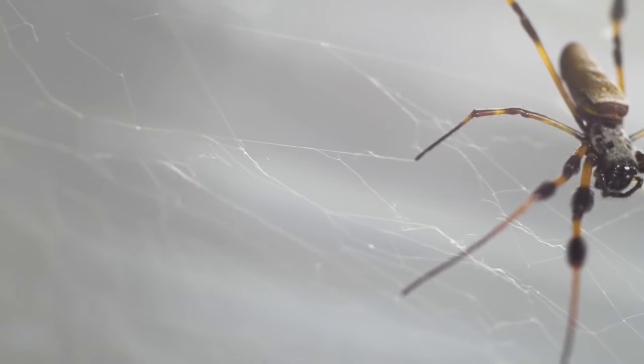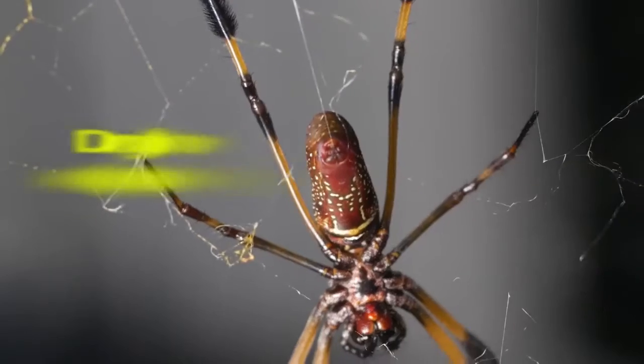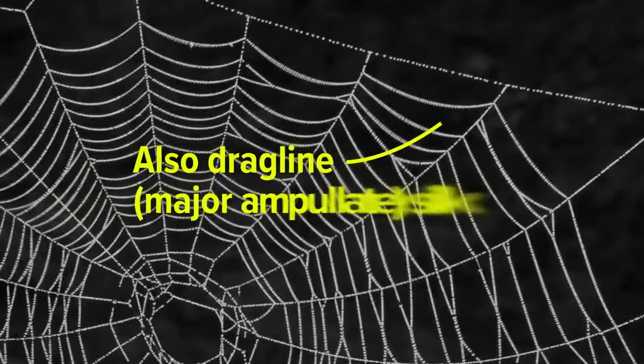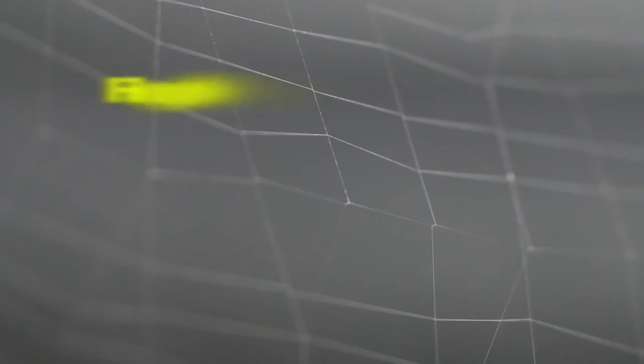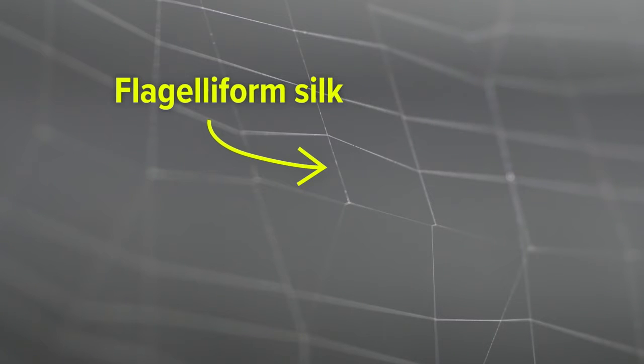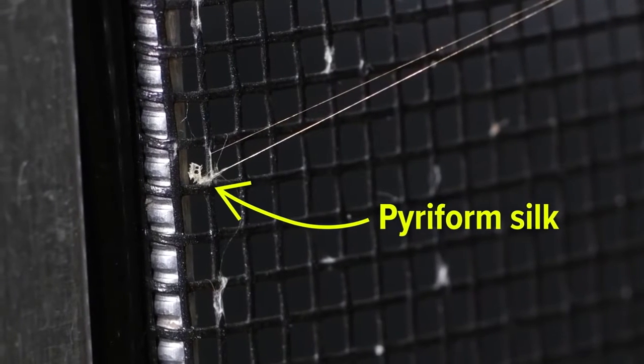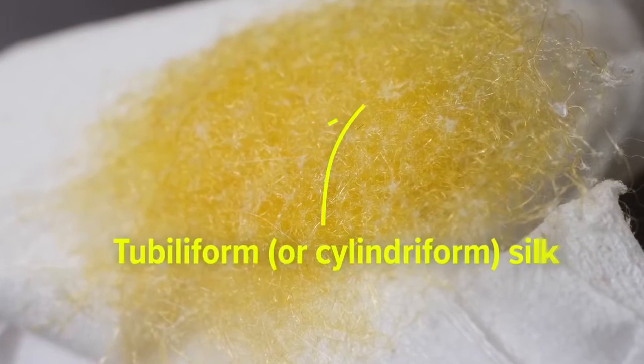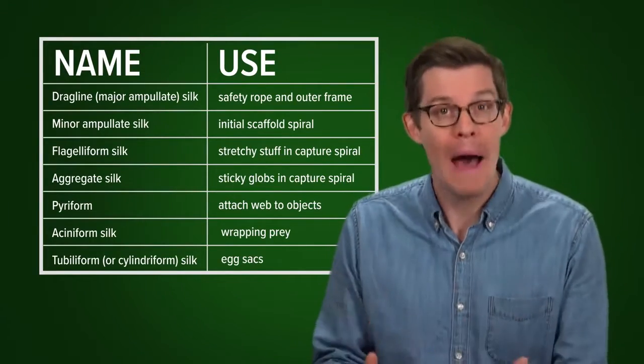When you look at the golden orb weaver's trademark web, you're actually looking at several different types of silk. There's the dragline silk. The spider drags it behind like a climber's safety rope. It also makes up the web's outer frame. There's one silk to guide the web's construction. The spiral that traps prey is actually a mix of two more silks—a stretchy silk covered in a sticky glue-like silk on top. There's a cement-like silk to attach the web to whatever it's hanging on. There's a silk for wrapping up prey. They even wrap their eggs in silk. Seven different silks, all made by one spider.